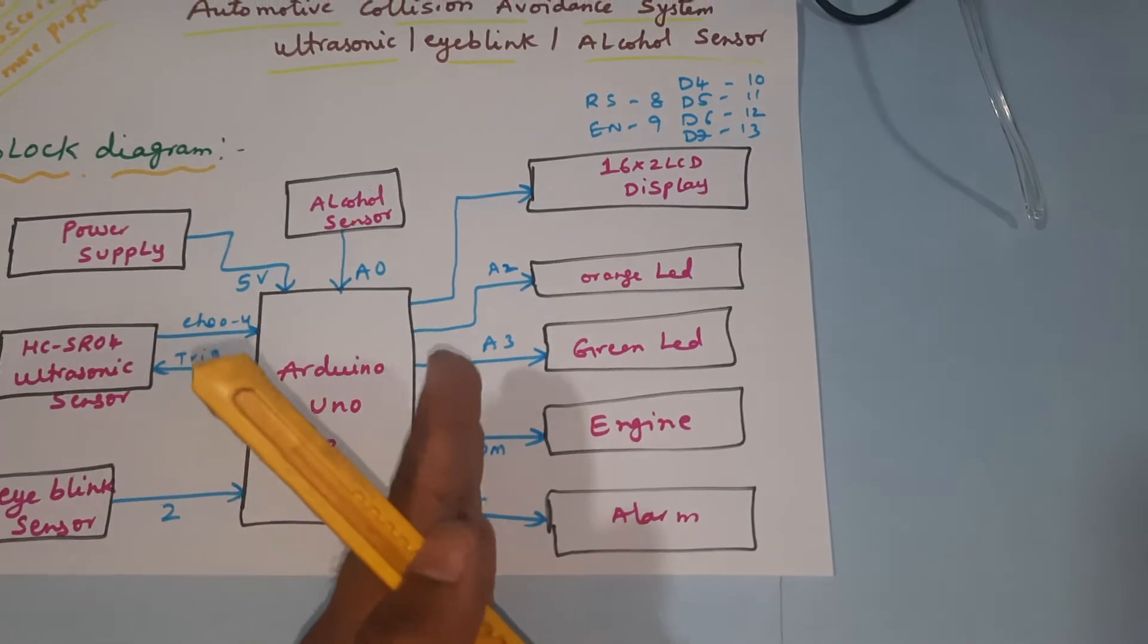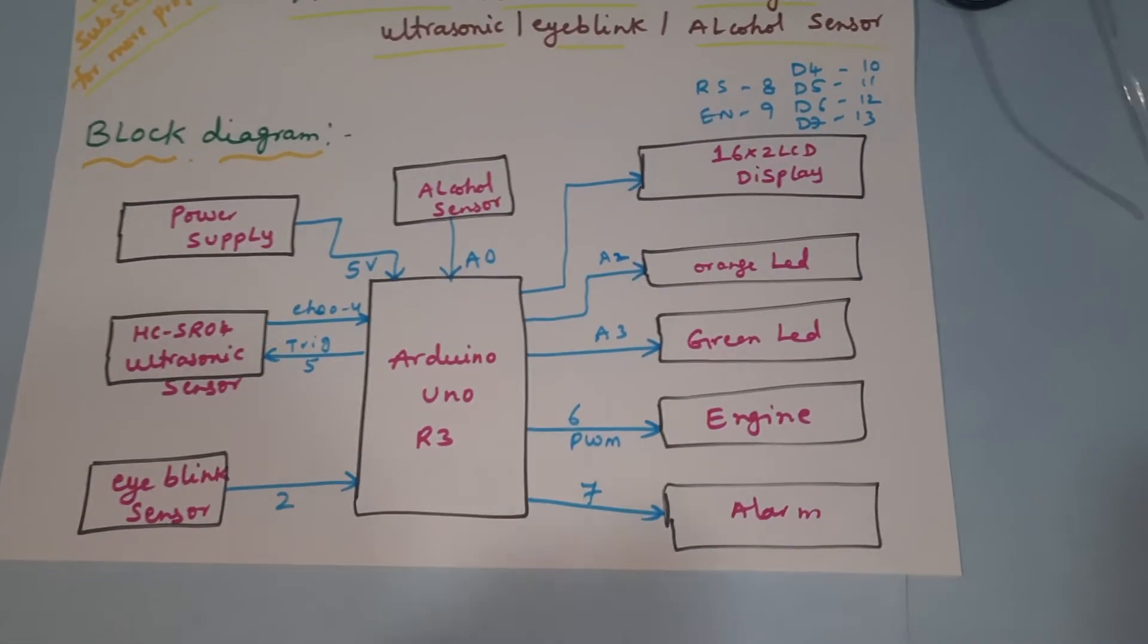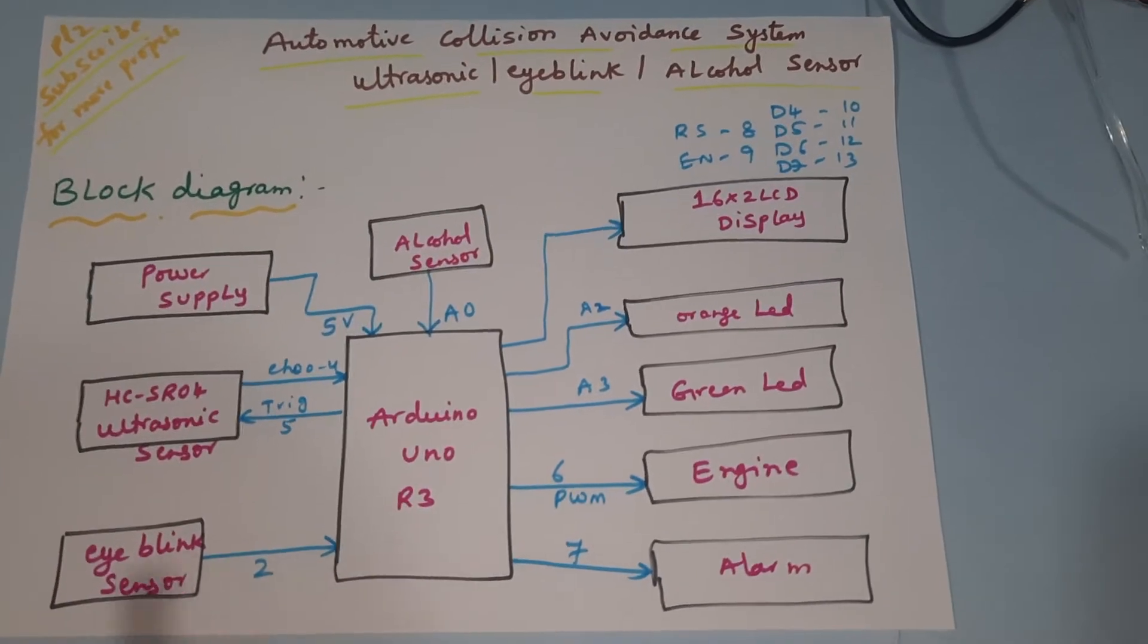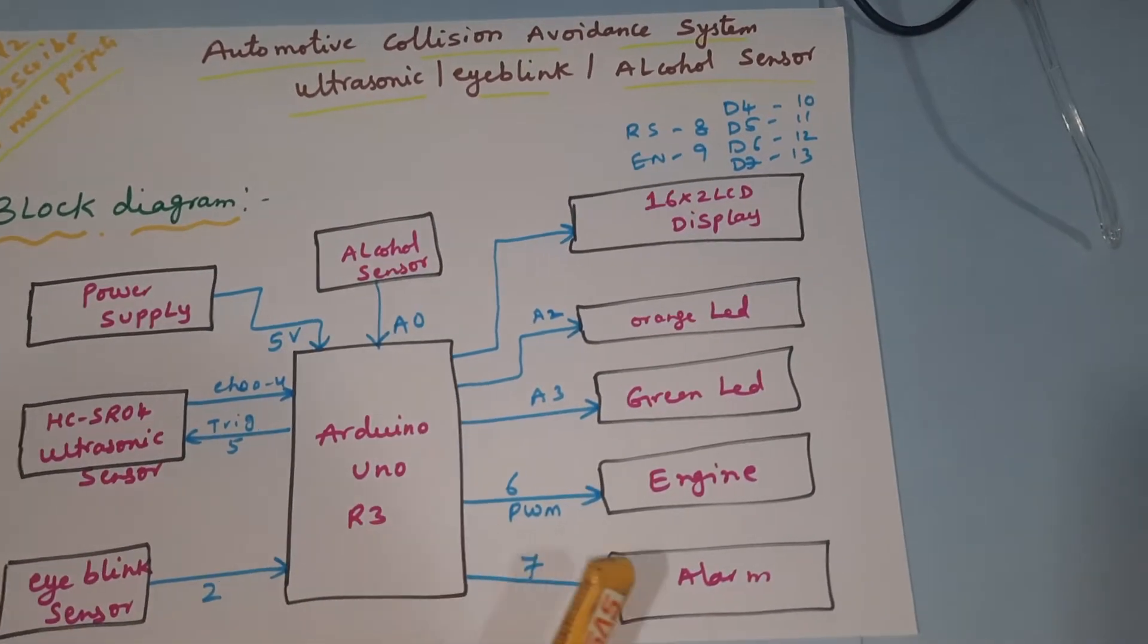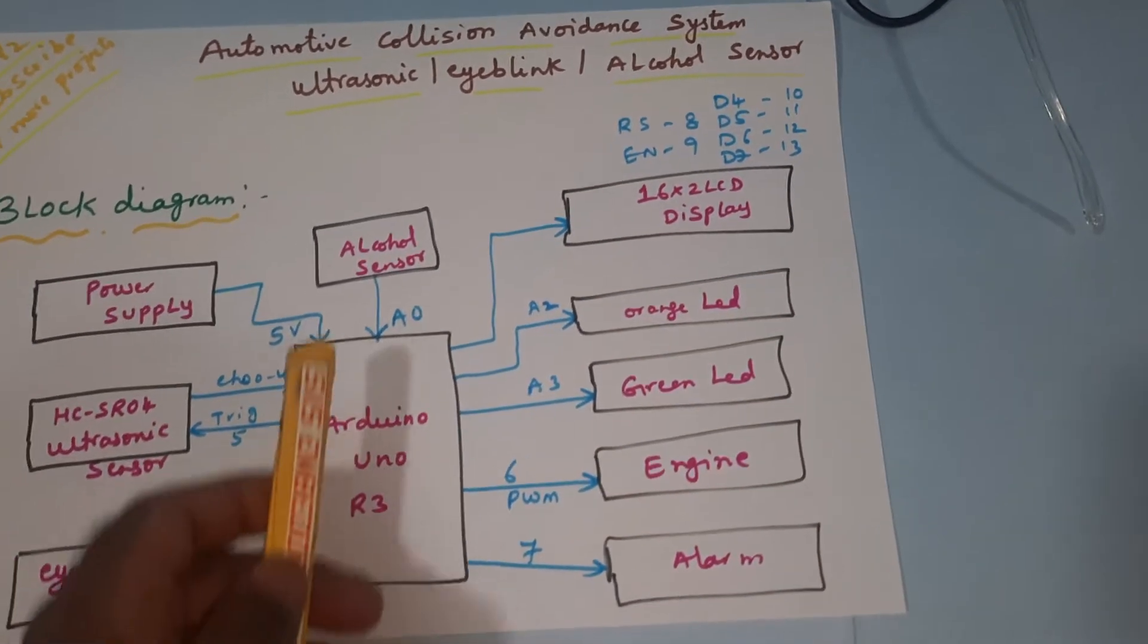Eye blink sensor will count the 10 eye blinks. After the 10th blink, the engine should be off and alarm on, and it will display on the LCD. The alcohol sensor, if alcohol detected, engine should be stopped.